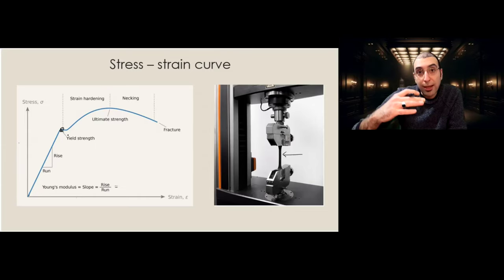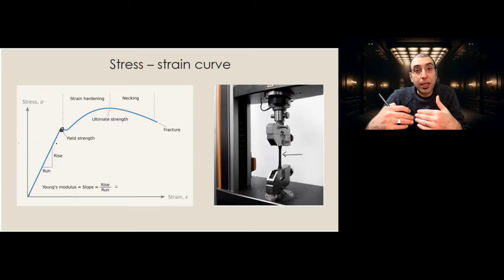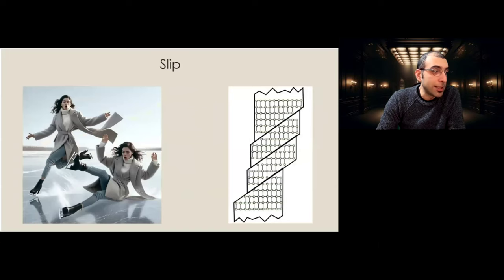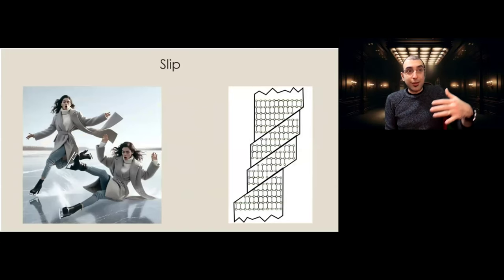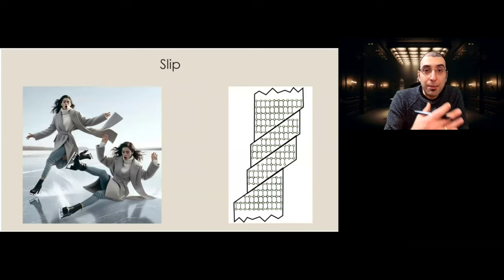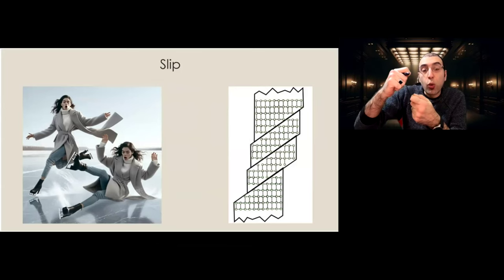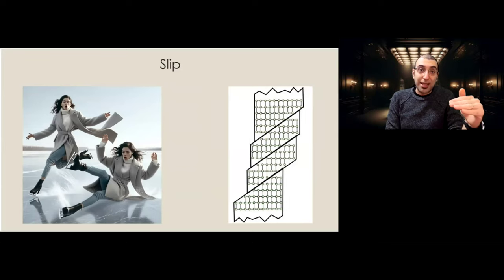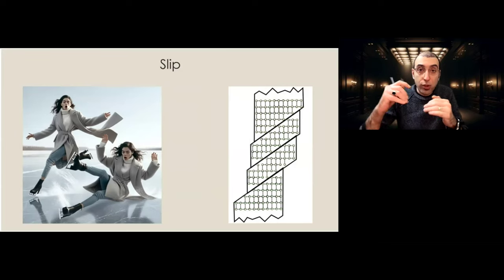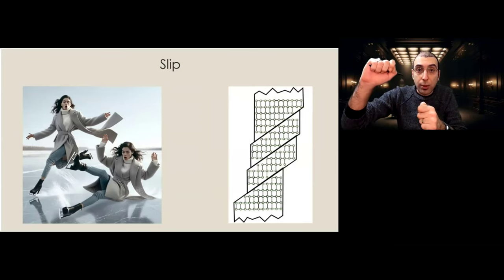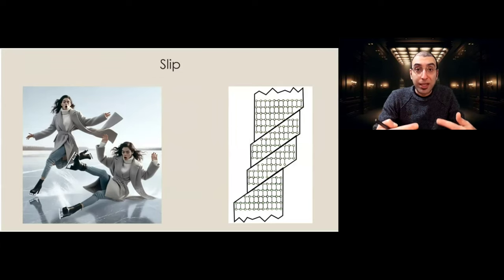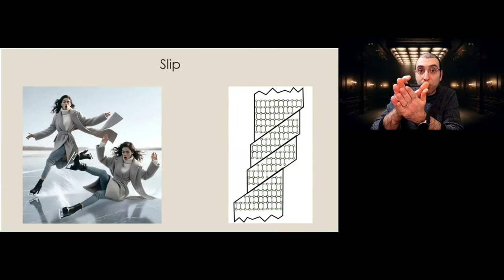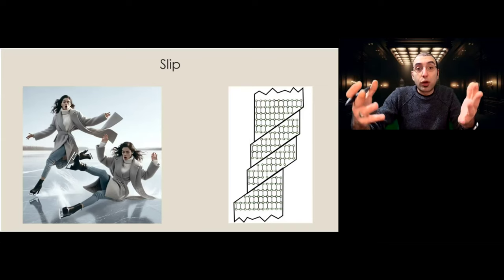As soon as we enter plastic deformation, we will have two mechanisms playing a role in permanent deformation. One mechanism is slip. Slip is the sliding of atomic planes on top of each other when you're applying a mechanical force. We applied enough force to pass the elastic region, and now we are in the plastic region. Slip accommodates for plastic deformation.